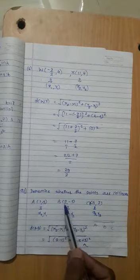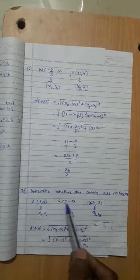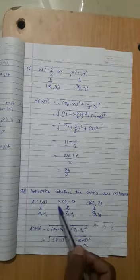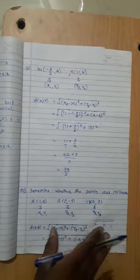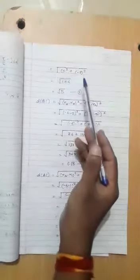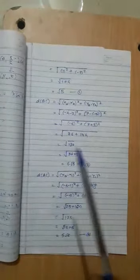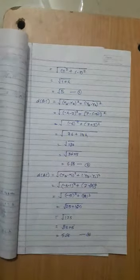Put values: (2 minus 1) squared plus (-5 minus -3) squared. That's (1) squared plus (-5 plus 3) squared equals 1 plus (-2) squared, which is 1 plus 4 equals 5, so root 5.